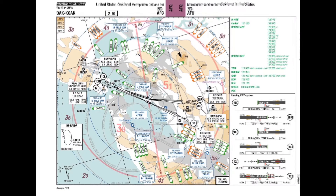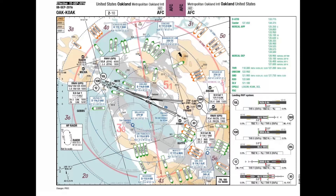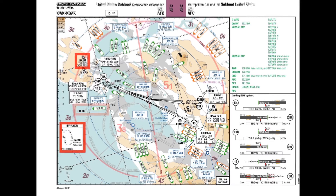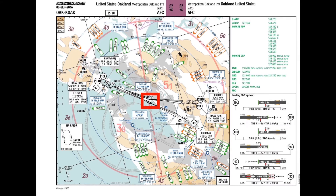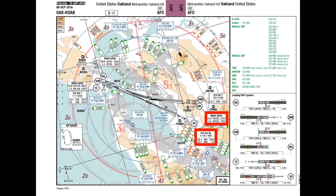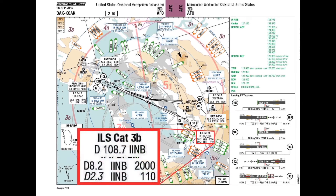Furthermore, the AFC Plan View depicts waypoints within the coverage of the AFC when defined as the first waypoint of a STAR, last waypoint of a SID, or as initial approach fix for depicted approaches, as well as associated holding patterns charted on the AFC. The plan view also depicts landing runway layout with the georeferenced minimum sector altitudes.